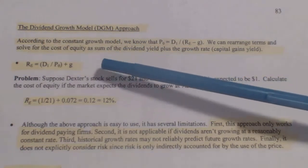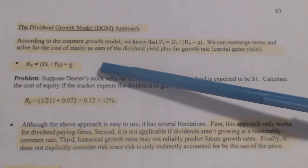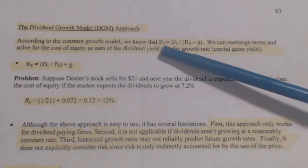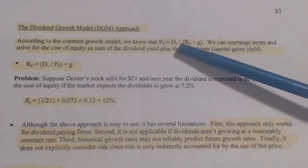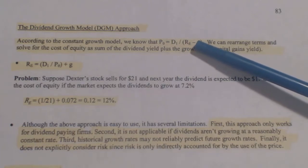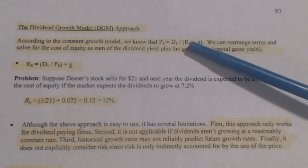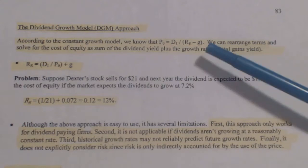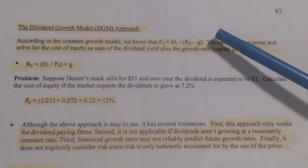This is how to figure out the return on a stock. According to the constant growth model, we know that price at year zero equals the dividend for period one, divided by the return R for equity minus the growth rate. There's the growth rate of the dividends in this case.